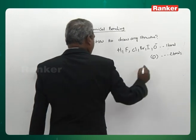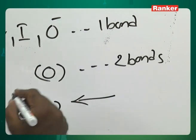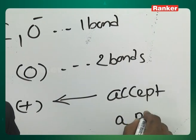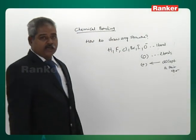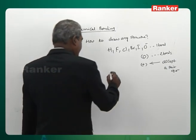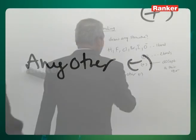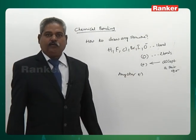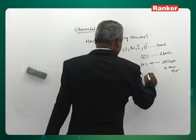Any plus in a group accepts a pair of electrons — a lone pair of electrons. If you have a positive species, it accepts a pair of electrons. And any other minus, other than O⁻ (O⁻ can form one bond), donates a pair of electrons.